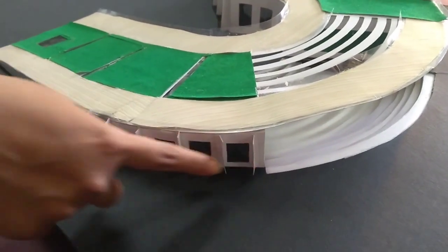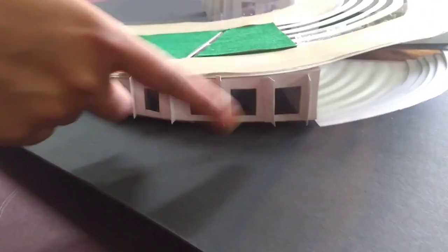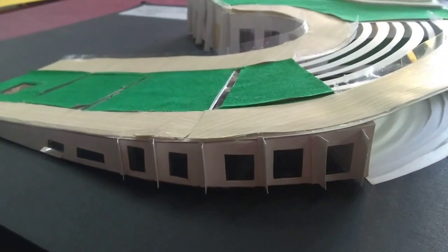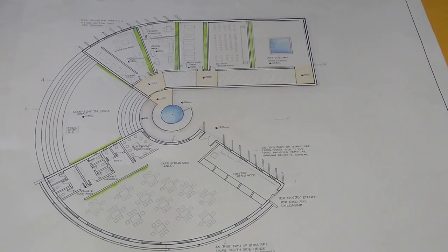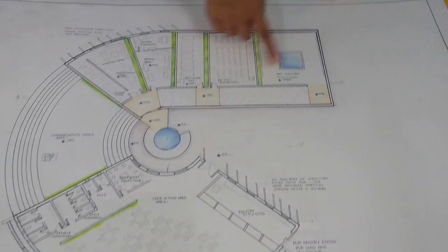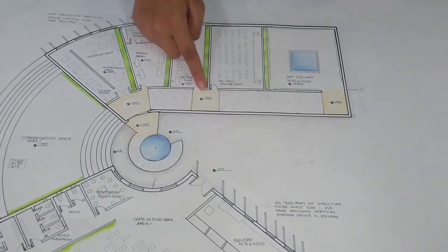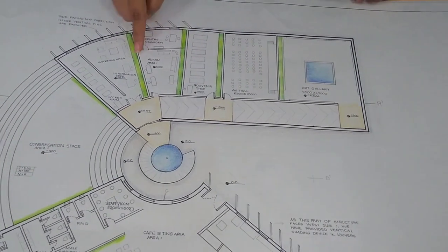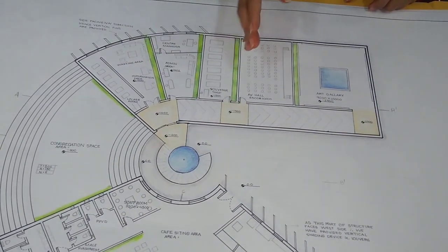I've provided vertical fence here and horizontal fence on this side for protection. So here, this is the entry for this block which is provided with the ramp. And these are the planters between every room or every section.